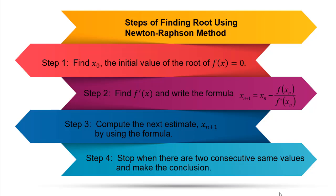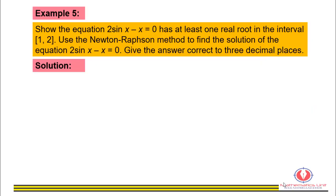The steps for finding the root of an equation using the Newton-Raphson method are: Step 1 — find x sub 0, the initial value of the root of f(x) = 0. Step 2 — find the first derivative f prime(x) and write the Newton-Raphson formula. Step 3 — compute the next estimate using the formula. Step 4 — stop when there are two consecutive same values and state the conclusion.